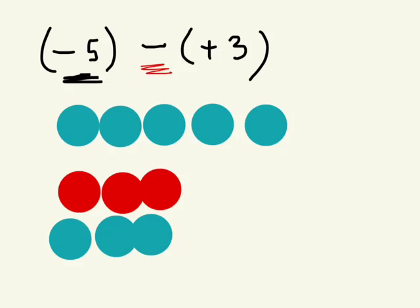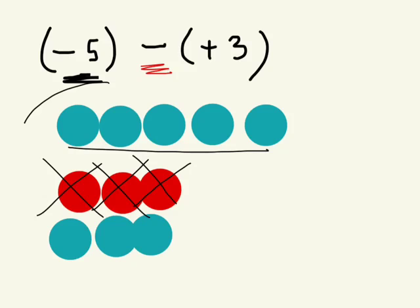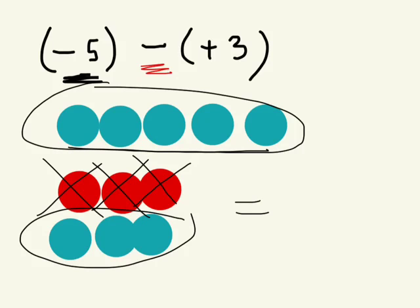Now we have our negative fives, which is here. Can we now take away three positives? One, two, three. And what are we left with? Eight. We're left with eight negatives. Good. So negative five take away positive three is negative eight.